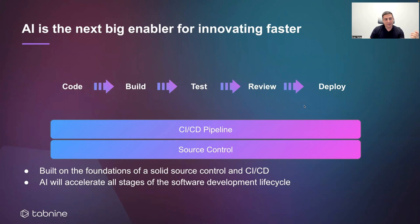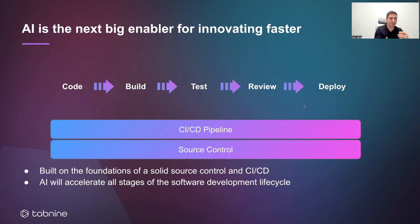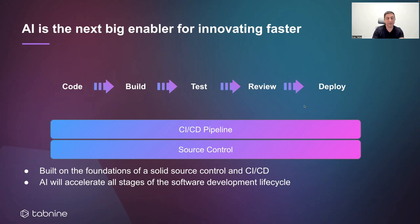In the past decades, organizations have realized that having a solid source control and CI/CD pipeline is essential for shipping high quality software. They've built these nice pipelines going from code all the way to deployment. And as you go through this pipeline, you're accumulating a lot of information in your system of records. You have the codebase, which contains code that has hopefully been tested and reviewed, so it contains a lot of the patterns and best practices of how code should be written inside the organization.